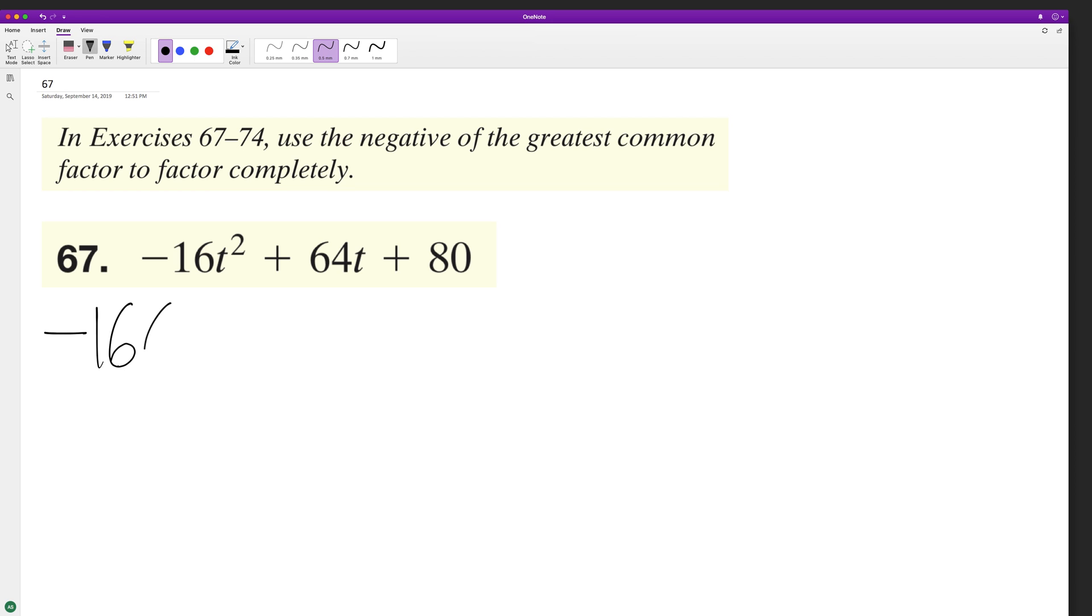So we end up with t squared minus 4t minus 5. This can be factored to t minus 5 and t minus 4—no, t plus 1. All right, so let's go ahead and test this out.